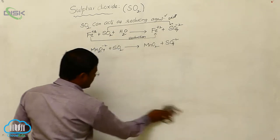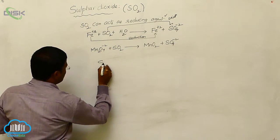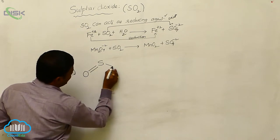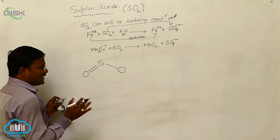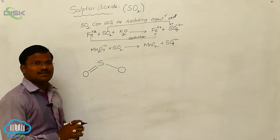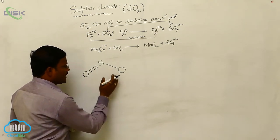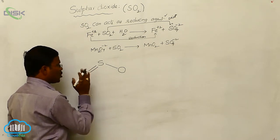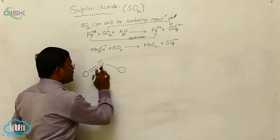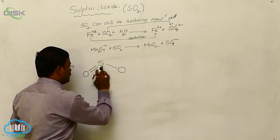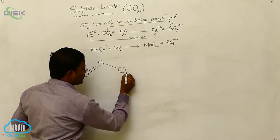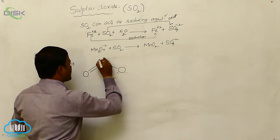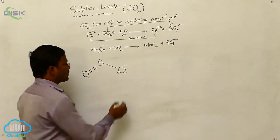Sulfur dioxide shows S double bond O and O. Like ozone, which has O double bond O, sulfur dioxide shows the same geometry. But in place of the middle oxygen, we substitute sulfur, because oxygen and sulfur belong to the same family. Hence, the number of non-bonding pairs of electrons present in sulfur dioxide is similar to that in ozone.